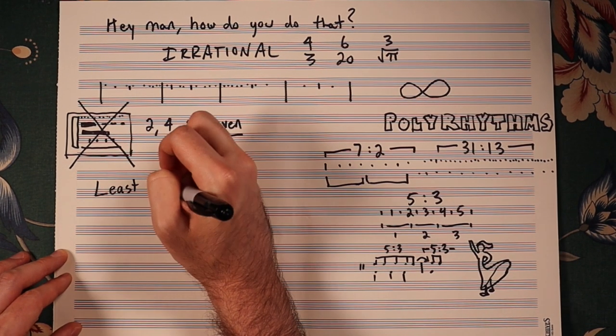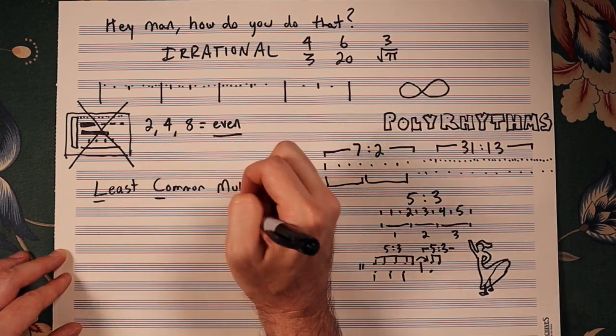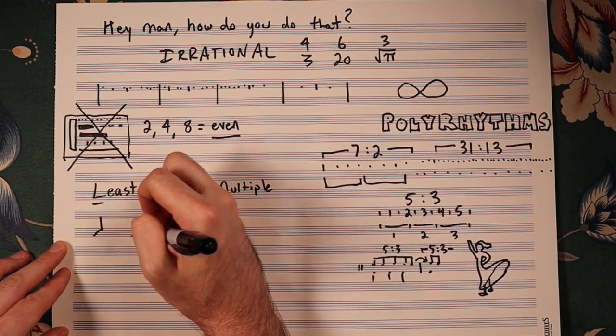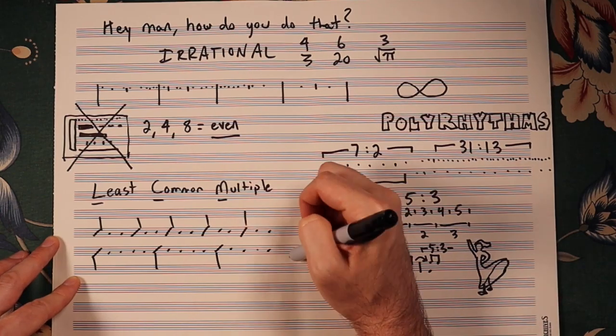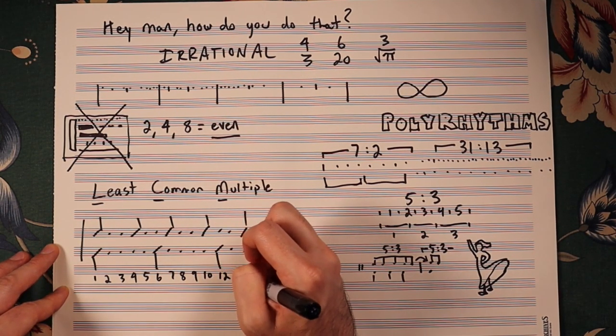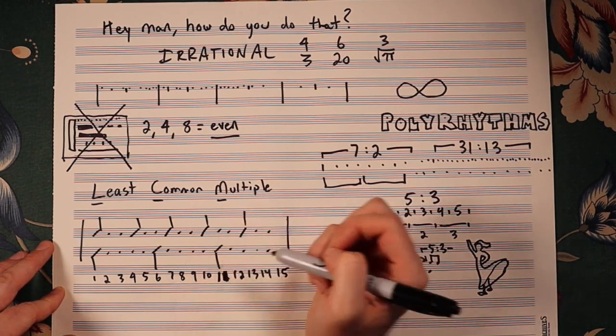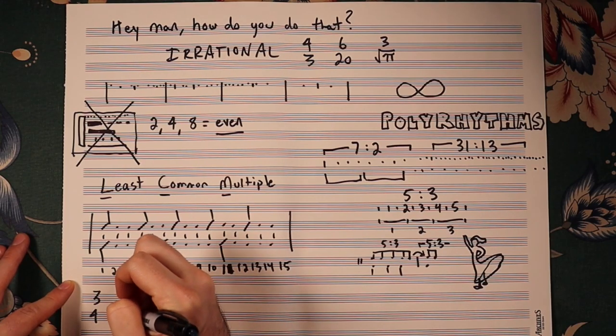The first thing we need to do is find the least common multiple of these two streams of rhythm. The least common multiple is the smallest number, not including 0, that is a multiple of both numbers. In this case, the least common multiple is 15. Thus, if we made a grid of 15 subdivisions, all of the hits would fit onto this grid. Now we're ready to choose our time signature.